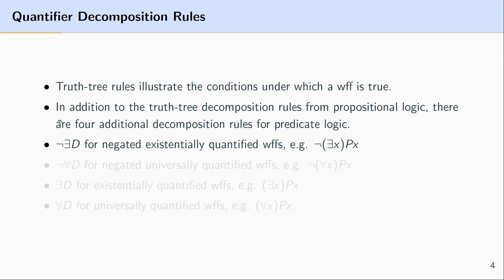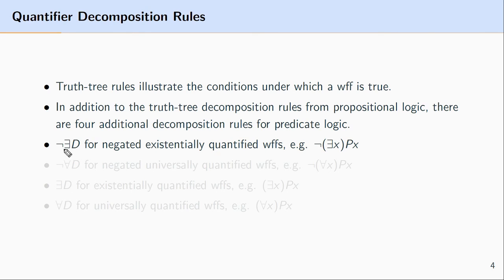The first decomposition rule is negated existential decomposition, abbreviated as 'not existential D.' This rule applies to negated existentially quantified well-formed formulas — that is, formulas where the main operator is negation and the operator with the next most scope is the existential quantifier. So if you see a formula that is a negated existentially quantified formula, you apply negated existential decomposition.